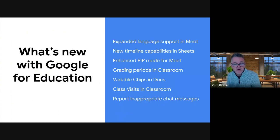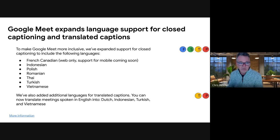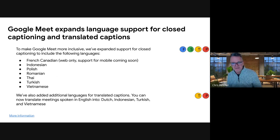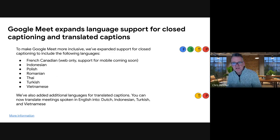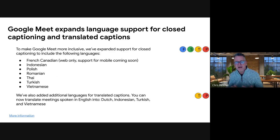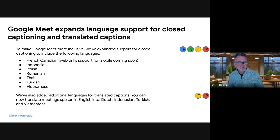Also the ability to report inappropriate chat messages. In Google Meet, we've introduced a whole bunch of other languages for closed captioning: French Canadian, French, Indonesian, Polish, Romanian, Thai, Turkish, and Vietnamese. We've also introduced additional languages for translated captions — for those with the Plus or Teaching and Learning version of Meet, it will translate captions into another language so you can converse with someone in another language. We're introducing Dutch, Indonesian, Turkish, and Vietnamese as well, and will continue to expand.